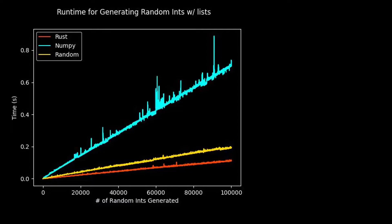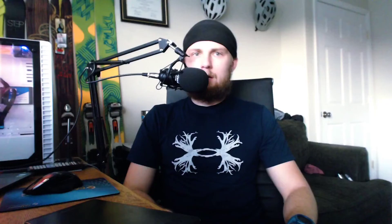Let's take a look at our first test using Python lists. Somehow NumPy is the slowest, which is by far the most surprising to me, considering a lot of its backend is written in C. NumPy took a little more than 700 milliseconds to generate 100,000 random integers and store them into a Python list — and that's just for the last test, not cumulative runtime. Python took just under 200 milliseconds, and Rust took just over 110 milliseconds, making it by far the fastest. This is more than six and a quarter times faster than NumPy, and almost one and three quarters times faster than Python and the standard random library.